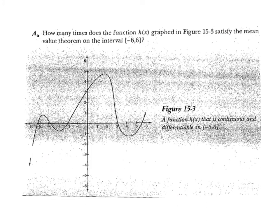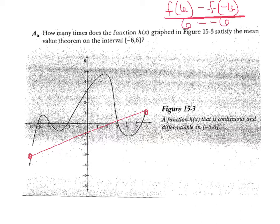I apologize that this copy didn't come out any cleaner than it did. We'll do the best we can nonetheless. They want us to know how many times this function satisfies the Mean Value Theorem from the interval -6 to 6. Here's -6, here's positive 6. We're going to connect those rascals. There's my secant line. The red line represents f(6) - f(-6) / (6 - (-6)).